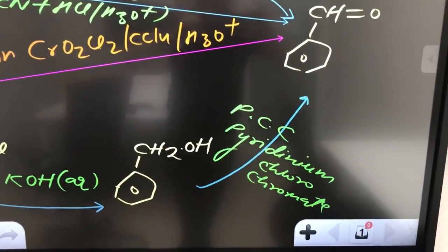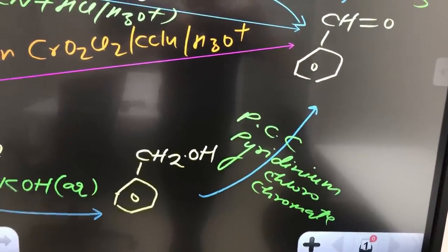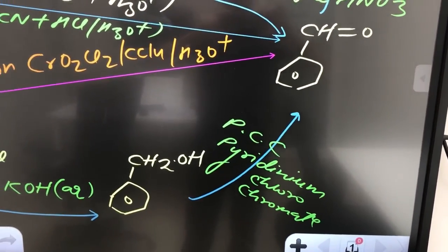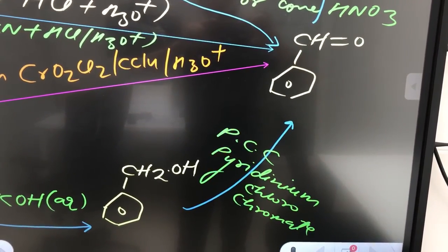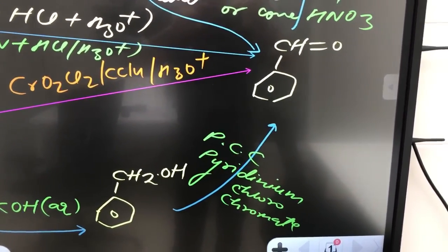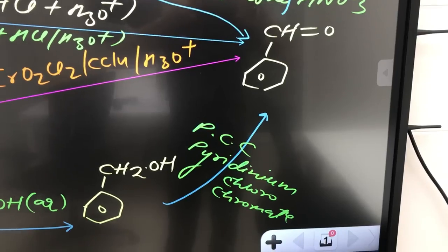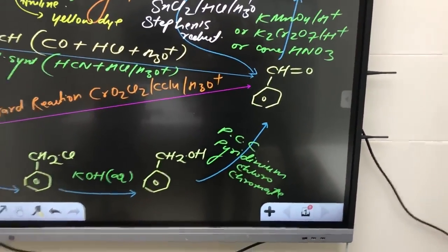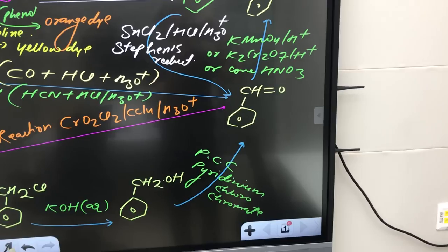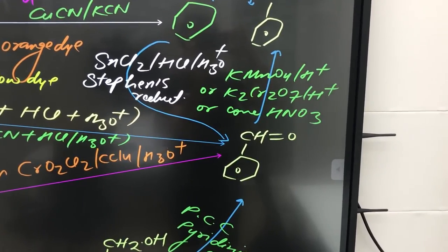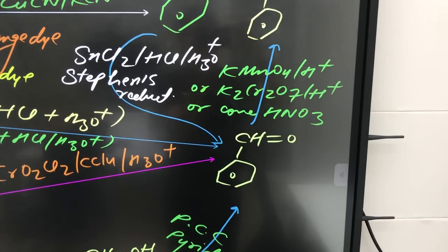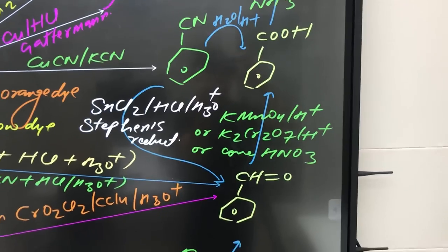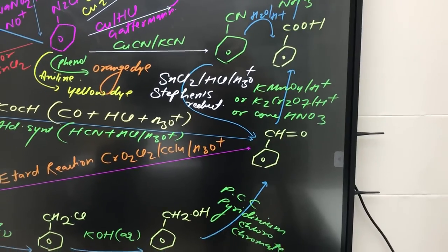Now this benzyl alcohol on reaction with PCC, this PCC is being MOA, means mild oxidizing agent. In your NCERT, if I talk about old NCERT, it's given on page number 332, and new NCERT on page number 340. Full form is pyridinium chlorochromate. This will convert benzyl alcohol to benzaldehyde. Now benzaldehyde on reaction with K2Cr2O7 acidic medium, potassium dichromate or concentrated HNO3, all these three are examples of strong oxidizing agent. This will convert benzaldehyde to benzoic acid.